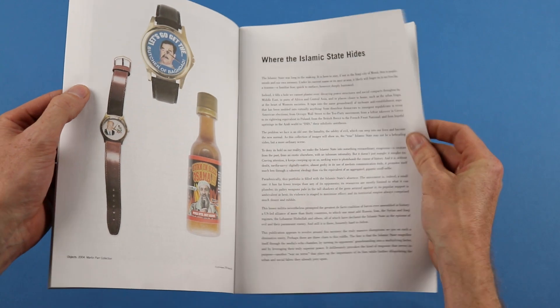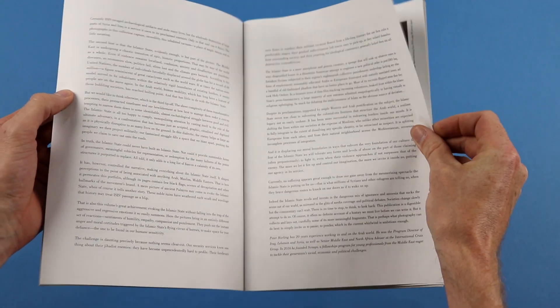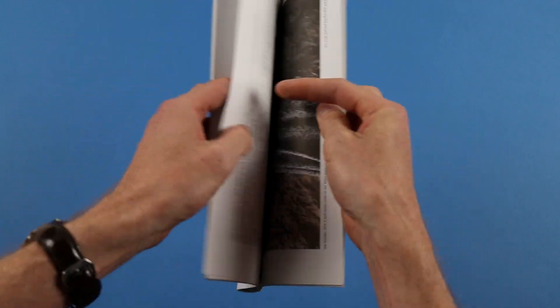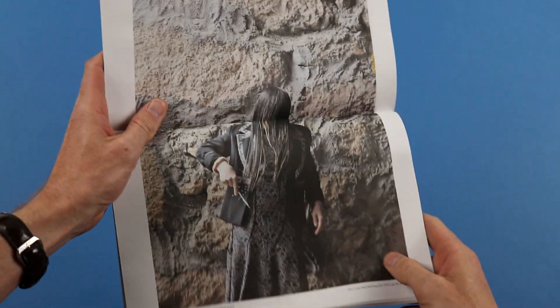It's all anchored by this excellent essay by Peter Harling, and he writes about the way that ISIS have been able to achieve a much greater impact than their size should allow by using the media.